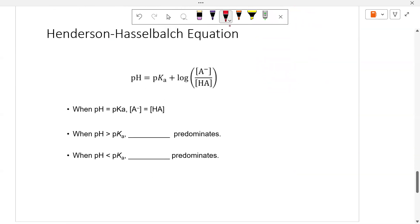We already said this, but notice when the top and bottom are equal, we get 1. Log of 1 is 0. So the pKa is really the tipping point. When the pH equals the pKa, we have equal amounts of both. If the pH is more than the pKa, the base form predominates. And if the pH is less, the acid form predominates.